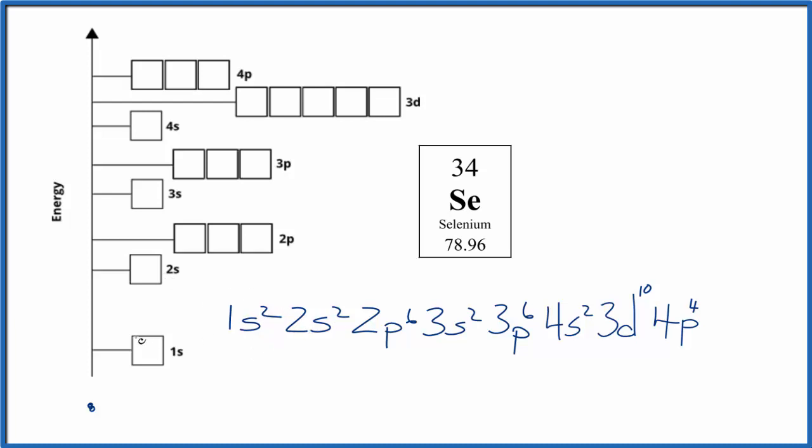So we'll start with 1s2. We put them here opposite directions. 2s2. 2p6, we spread them out and then pair them up.